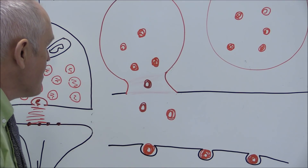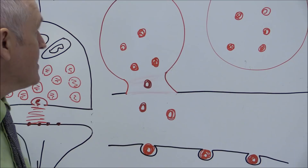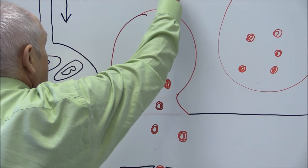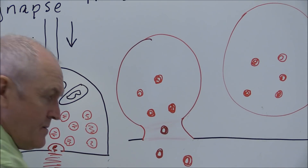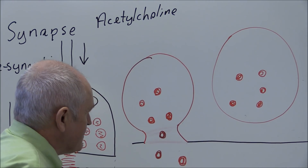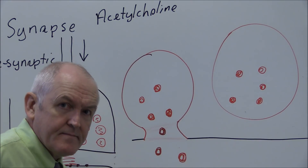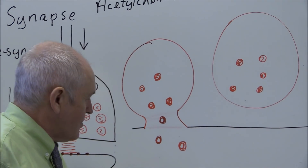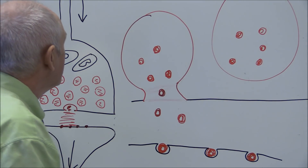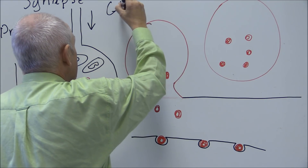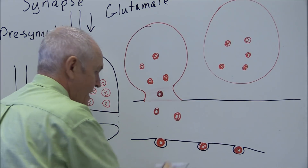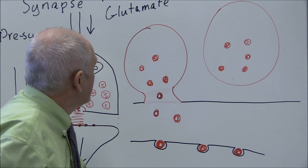At the neuromuscular junction, the chemical transmitter is acetylcholine. Alternatively, in a synapse in the brain that wants to stimulate brain activity, the transmitter could be glutamate — glutamate stimulates neuronal activity.